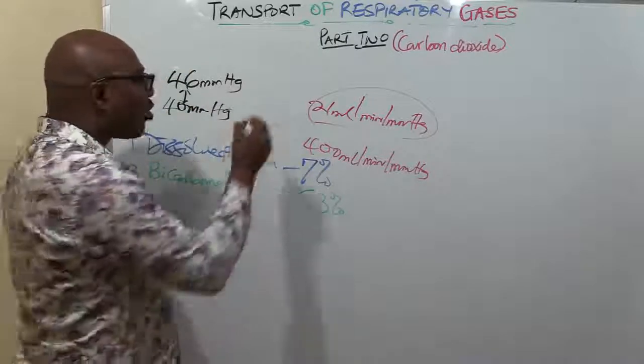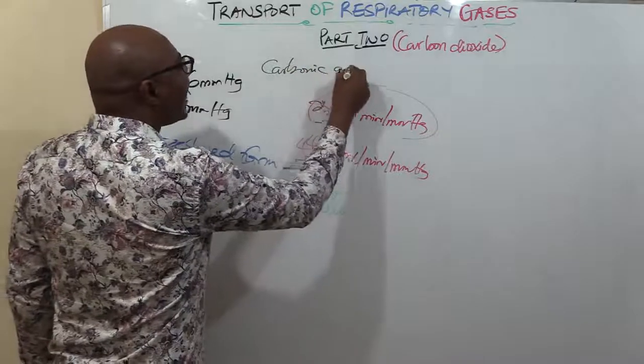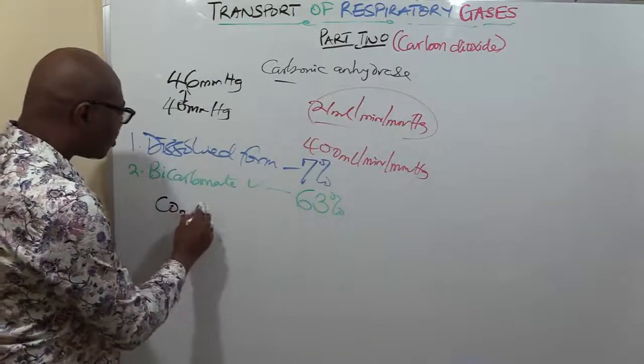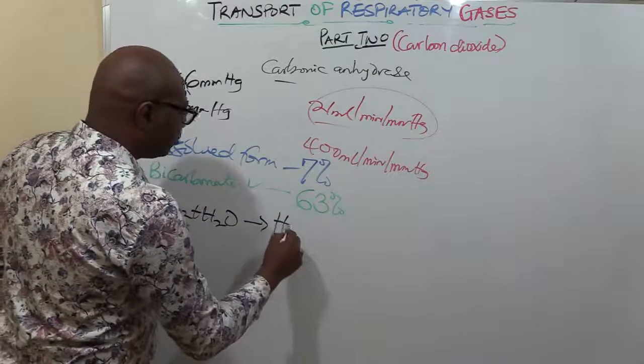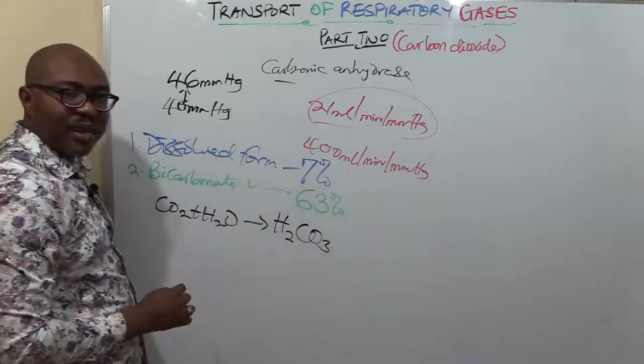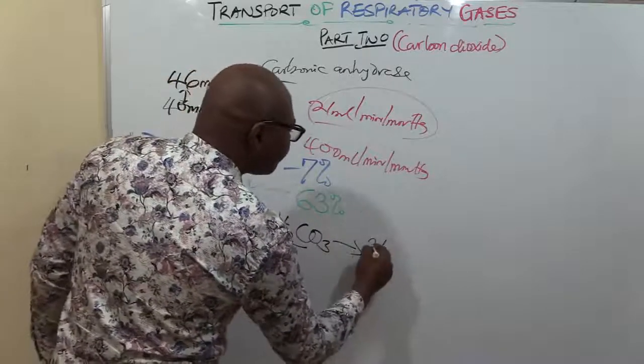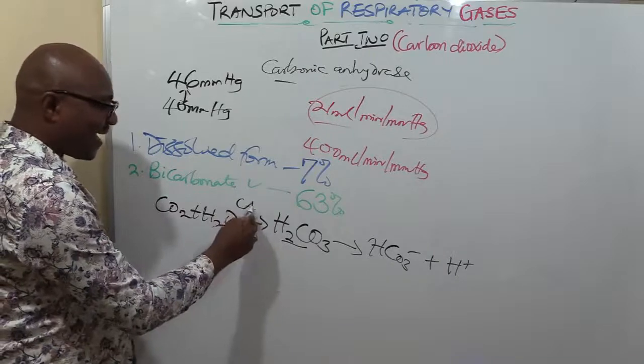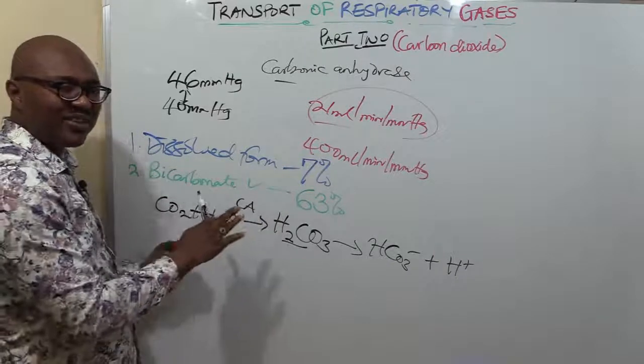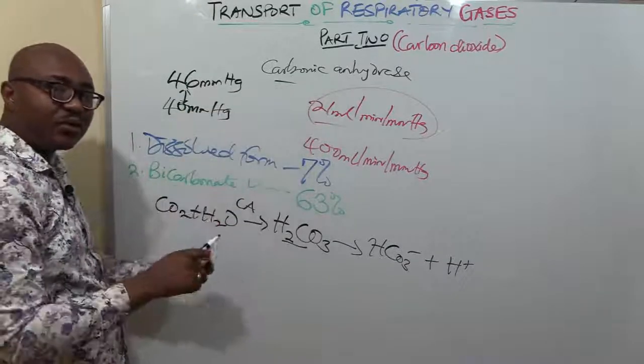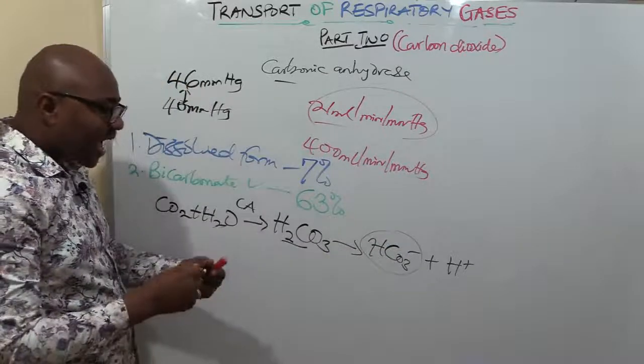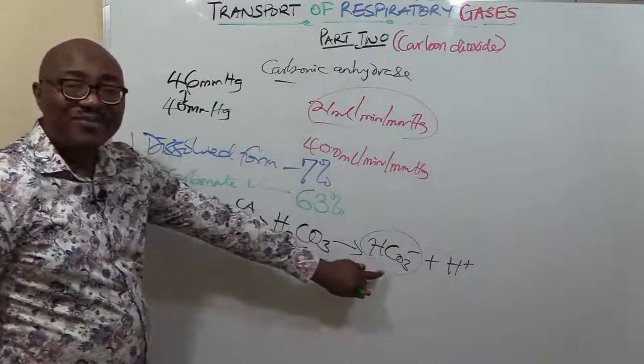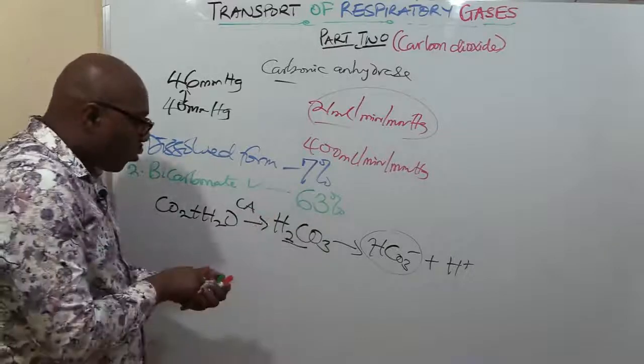CO2 will move into the red blood cells, and the red blood cells have an enzyme called carbonic anhydrase. This enzyme catalyzes the reaction: CO2 plus water forms carbonic acid, which then dissociates into bicarbonate plus hydrogen ion. Are you seeing it now? It's catalyzed by carbonic anhydrase. Without it, this reaction is very slow, but a lot of this enzyme is in the red blood cells.